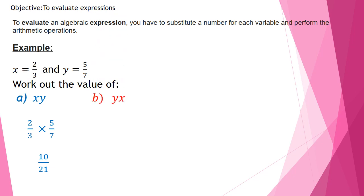Part B, yx. I have to substitute first y, then times x. y is 5 over 7 times 2 over 3. 5 times 2 is 10. 7 times 3 is 21.